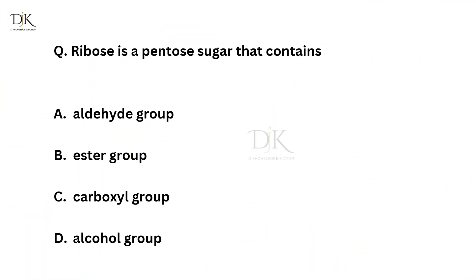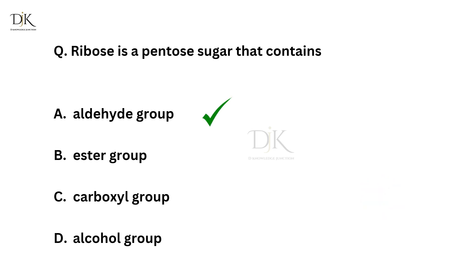Ribose is a pento sugar that contains? Right answer is aldehyde group.